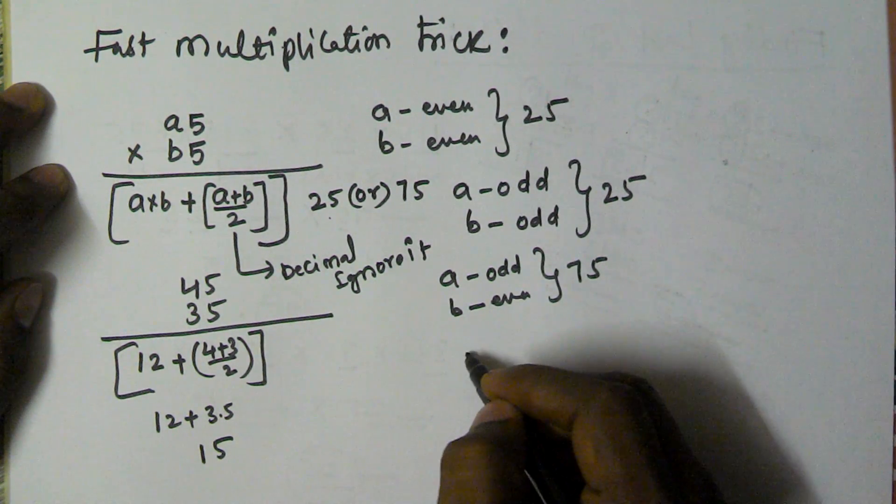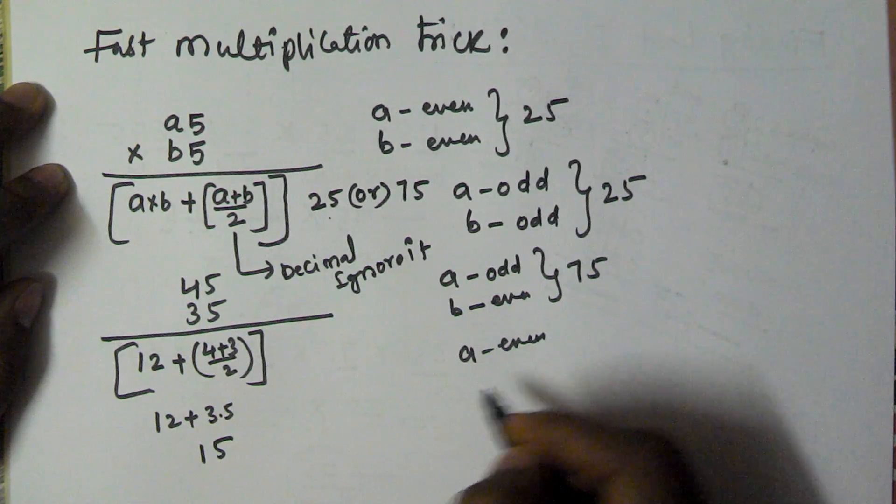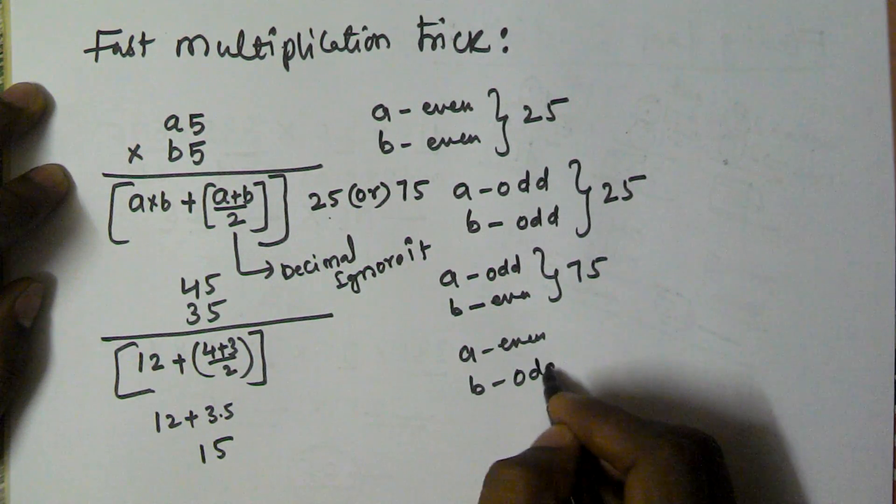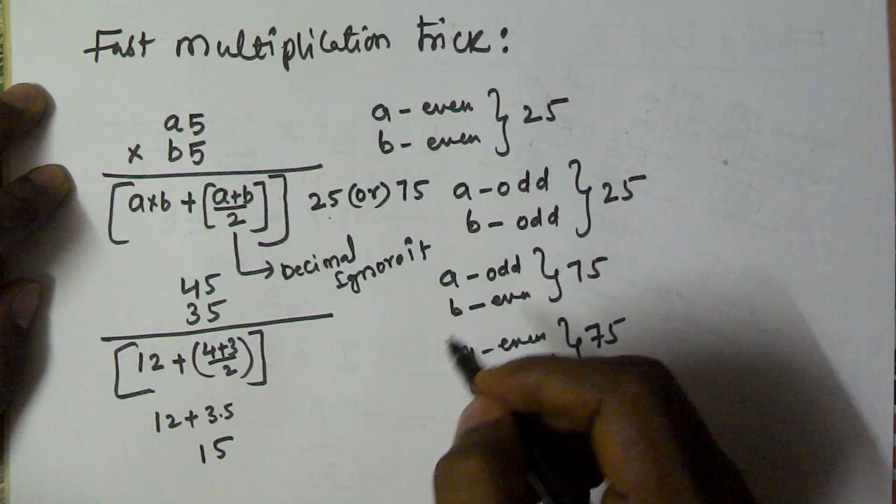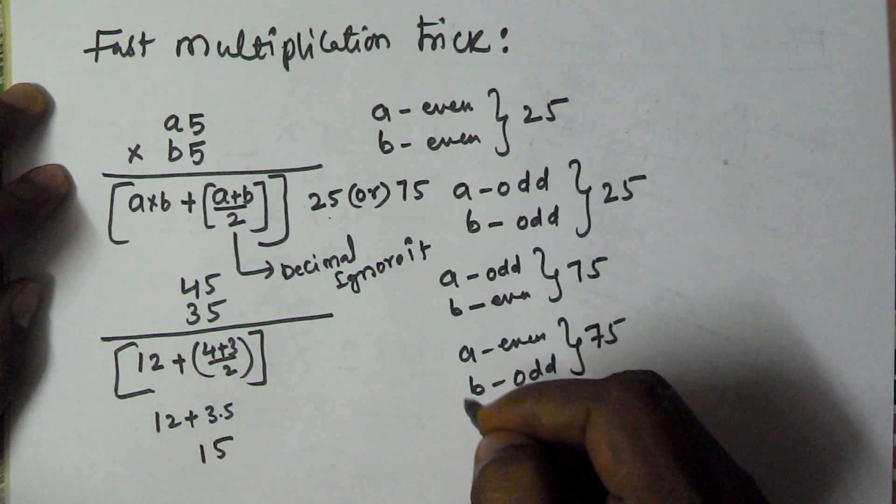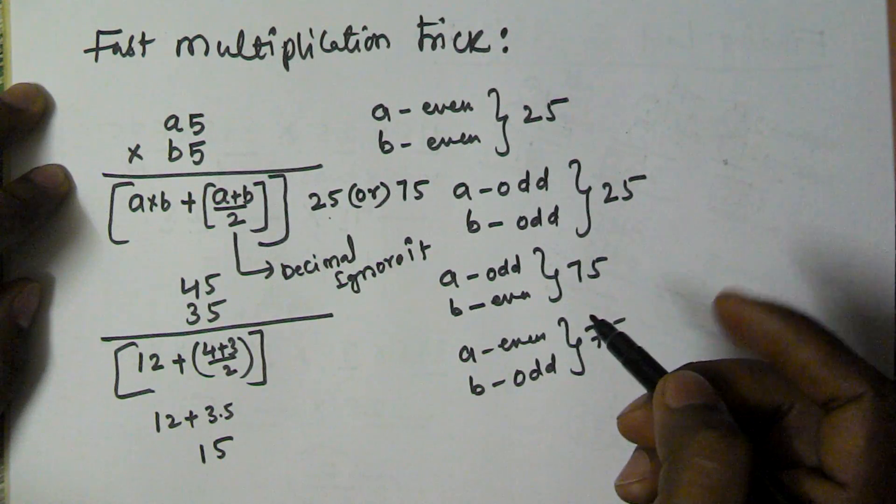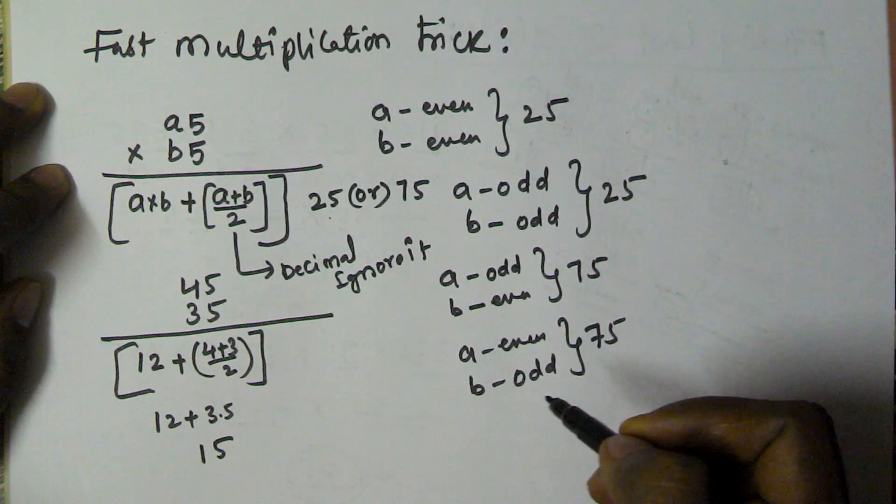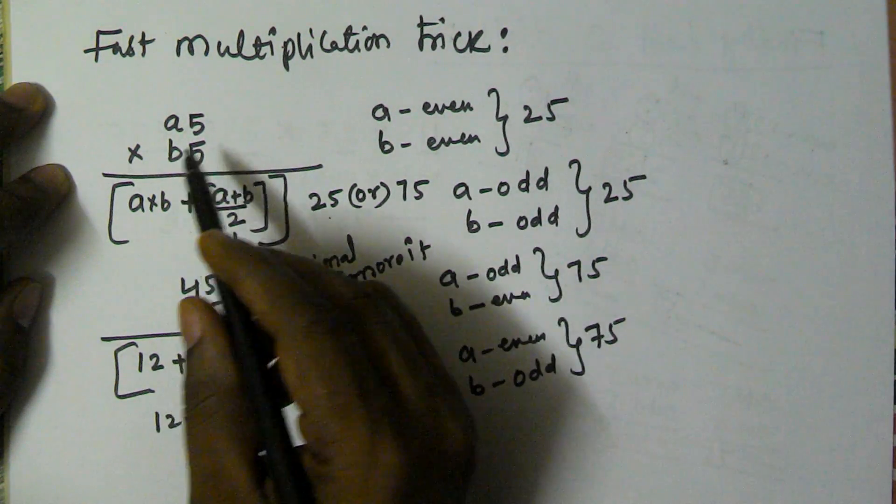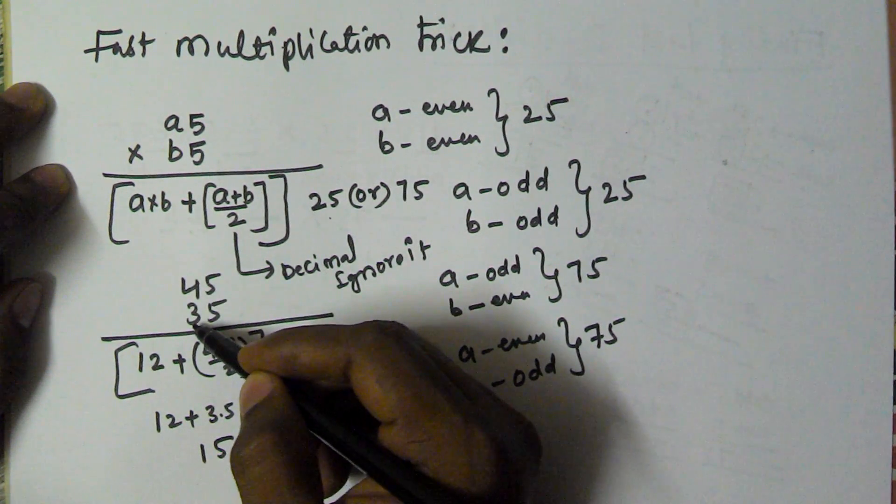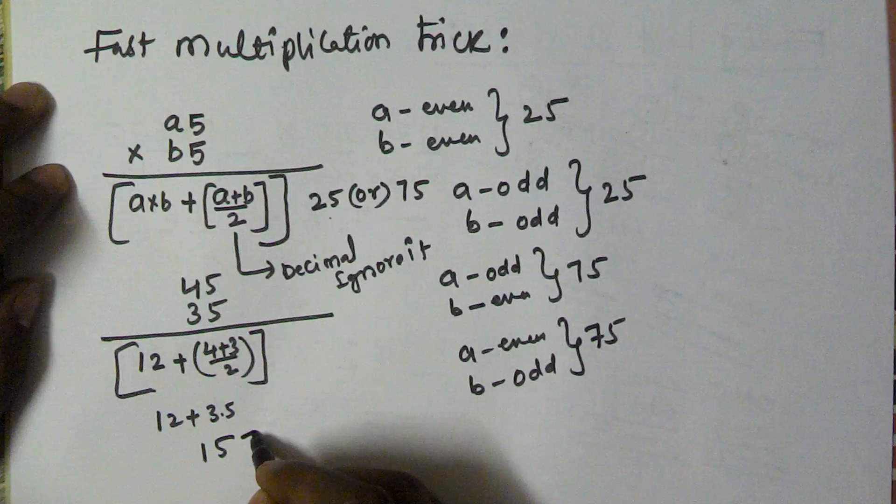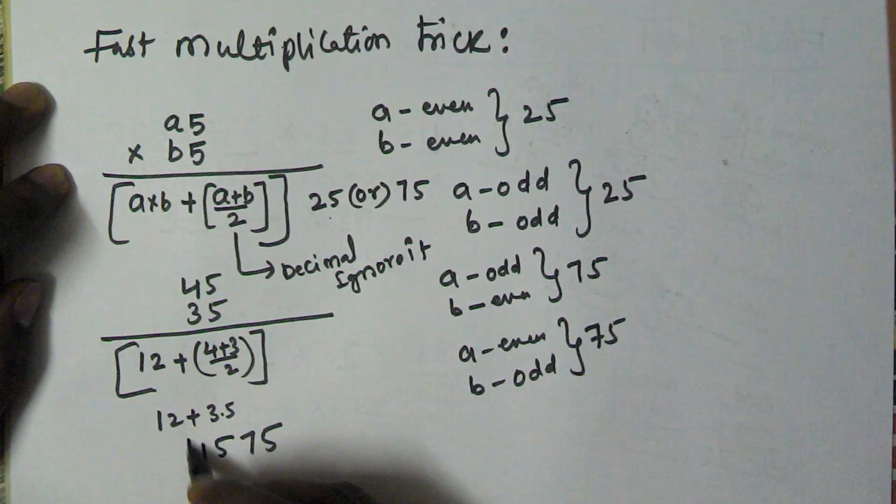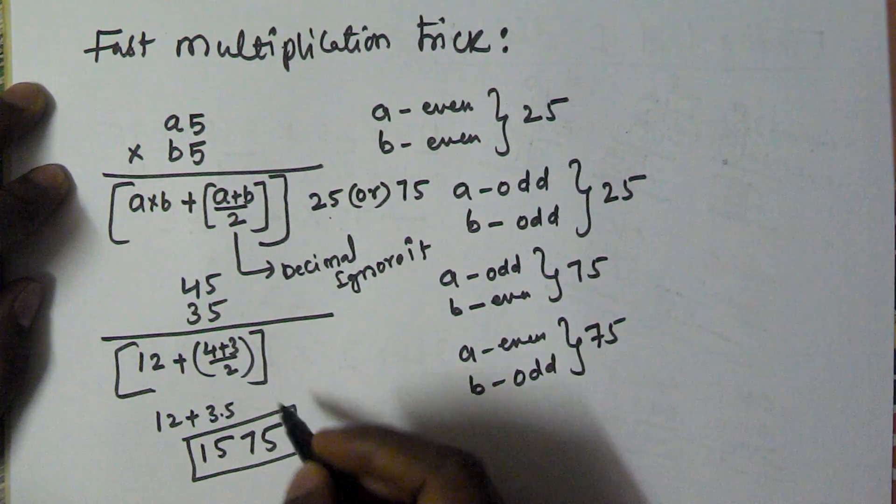Otherwise, if a is even and b is odd, we take 75. If both are even, 25; if both are odd, 25; if one is even and another is odd, we take 75. In our case, a is 4 and b is 3, one is even and the second is odd, so the second part is 75. So 45 into 35 is 1575.